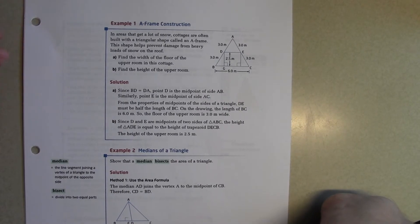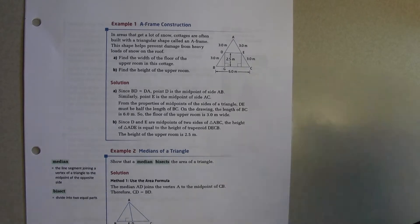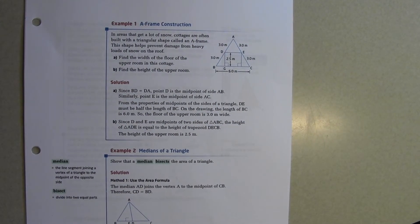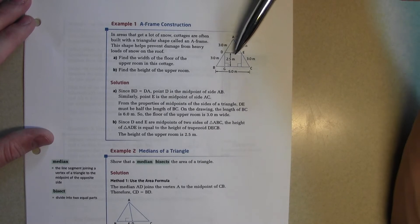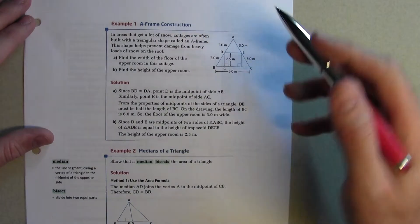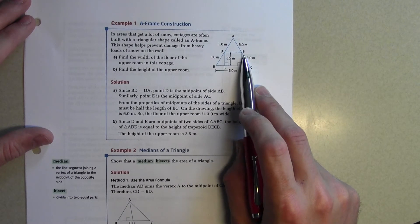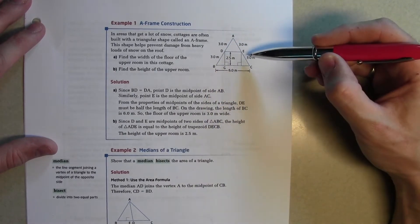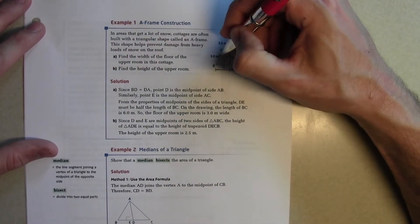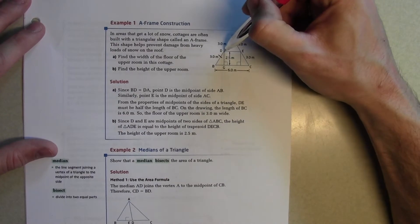Let's check it out now. Example 1. In areas that get a lot of snow, cottages are often built with a triangular shape called an A-frame. This shape helps prevent damage from heavy loads of snow on the roof. Find the width of the floor of the upper room in this cottage. So here's our cottage. I believe the width of the upper floor would be DE. Let's see. Since BD is equal to DA. So BD is equal to DA. So we know that. It's given. 3 and 3. Those sides are equal.